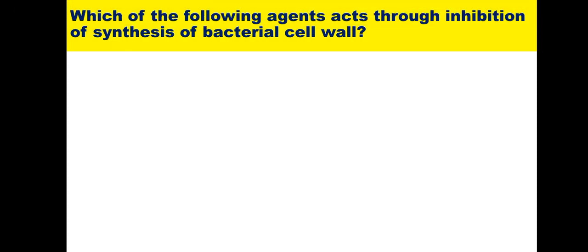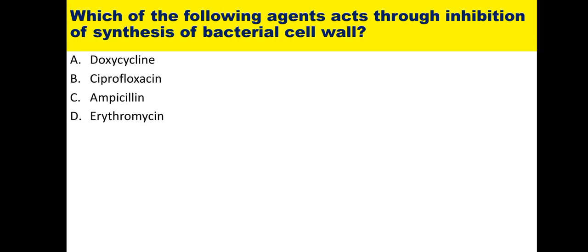First: which of the following agents acts through the inhibition of synthesis of bacterial cell wall? There are different mechanisms of action of antimicrobial agents, like inhibition of bacterial protein synthesis, inhibition of certain enzymes like DNA gyrase, and inhibition of cell wall synthesis. The options are doxycycline, ciprofloxacin, ampicillin, and erythromycin.